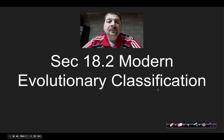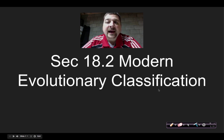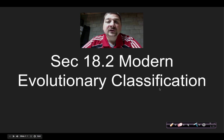Hey, Hammy here. Today we're going to be talking about Section 2 of Chapter 18, Modern Evolutionary Classification, where we will look at how evolutionary relationships are used in classifying or grouping organisms.